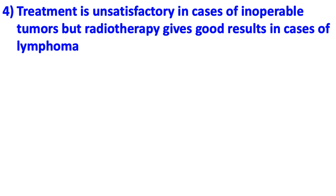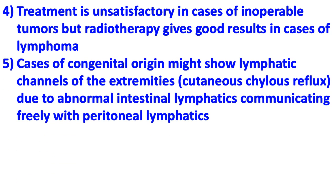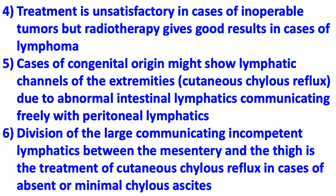Treatment is unsatisfactory in cases of inoperable tumors, but radiotherapy gives good results in cases of lymphoma. Cases of congenital origin may show lymphatic channel abnormalities of the extremities and cutaneous chylous reflux due to abnormal intestinal lymphatics communicating freely with regional lymphatics. Division of the large communicating incompetent lymphatics between the mesentery and the thigh is the treatment for cutaneous chylous reflux in cases of absent or minimal chylous ascites.